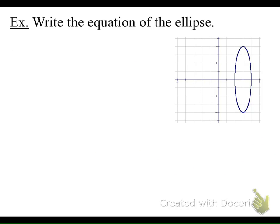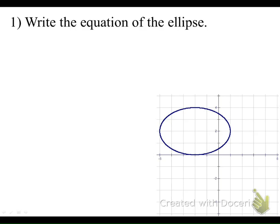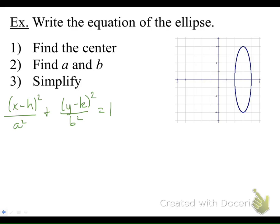The first thing we're going to do with our ellipses is write an equation from a picture, and much like circles, there's some information we'll need: we'll need to find the center, the a distance, and the b distance, then simplify our equation. We'll write down our standard form equation: (x − h)² / a² + (y − k)² / b² = 1. Remember, an equation of an ellipse is always set equal to 1 and we will always have addition between our two terms.